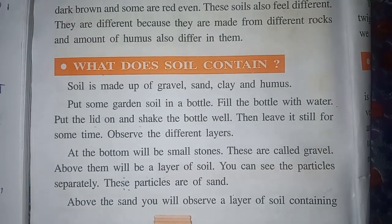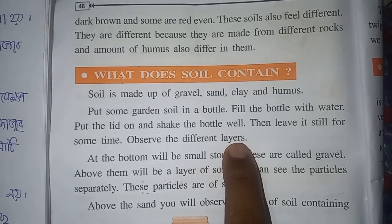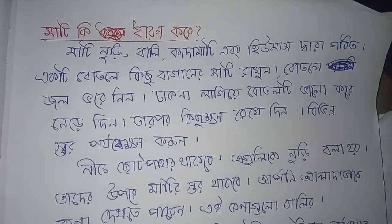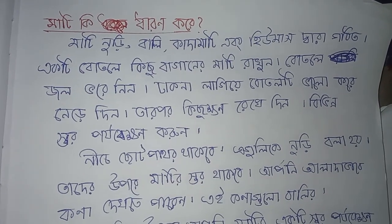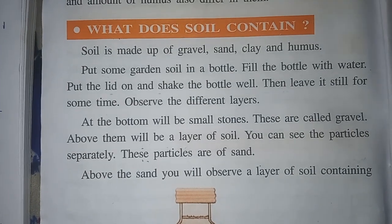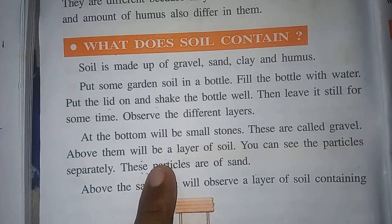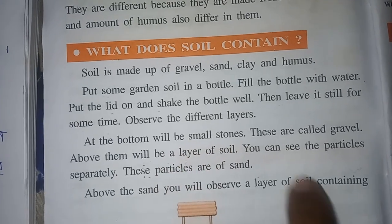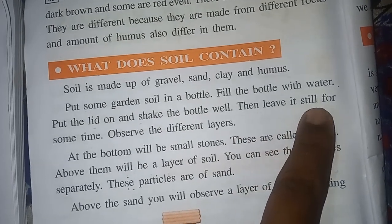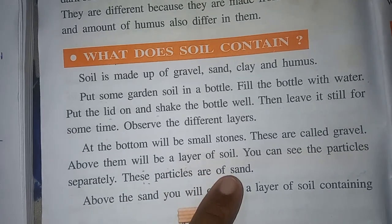To observe the different layers, leave a soil-water mixture still for some time. At the bottom will be small stones, called gravel. Above them will be layers of soil. Then leave it still for some more time. You can see the particles separately — these particles are of sand.